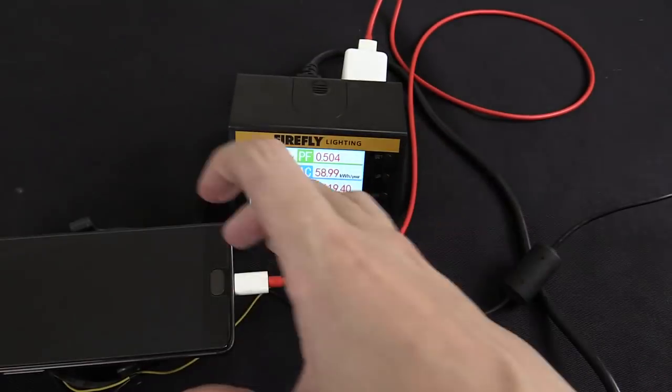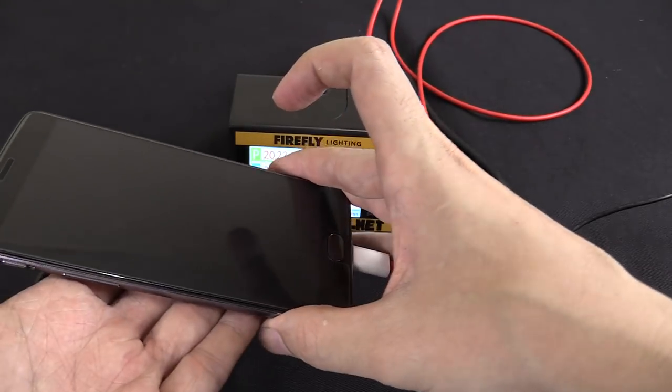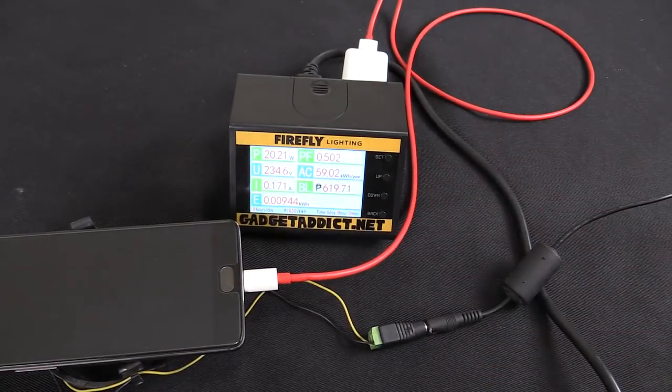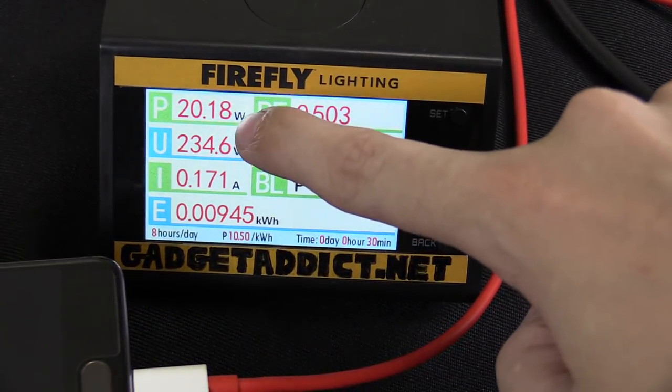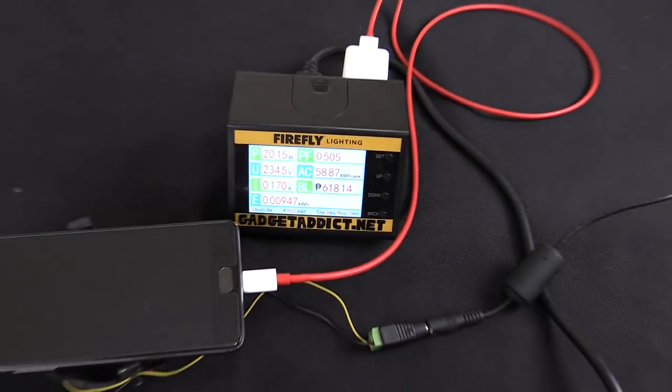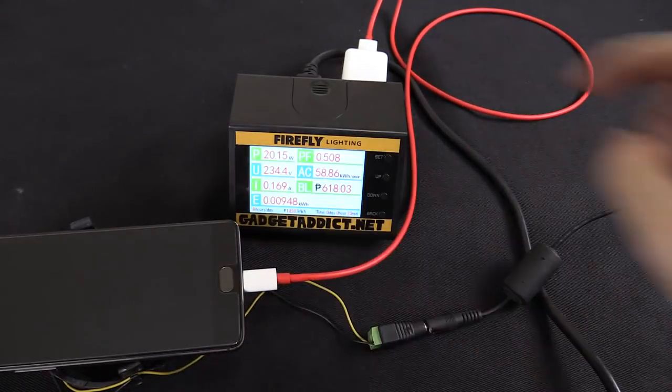We've got 2 minutes remaining and the phone is still nice and cool thanks to this basic cooling setup. You can see it's currently drawing just over 20 watts, so it's actually increased a little bit. We just have around 1 or 2 minutes left and then we'll check the percentage.